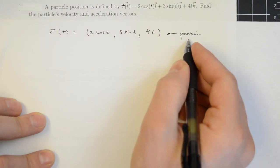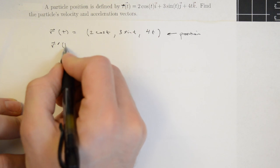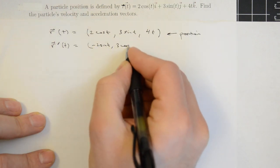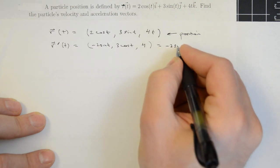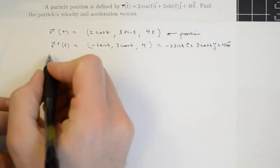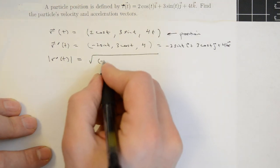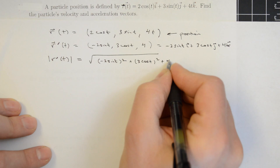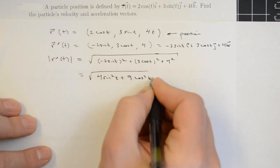To find the velocity and acceleration, we do the normal thing in Newtonian physics: velocity is the first derivative and acceleration is the second derivative. The derivative in time is computed component-wise, giving minus 2 sine t in the i-component, 3 cosine t in the j-component, and 4 in the k-component — written as minus 2 sine t i plus 3 cosine t j plus 4k. We can compute the magnitude of the velocity vector, which equals the speed: the square root of the sum of the squares of each component, giving 4 sine squared t plus 9 cosine squared t plus 16.